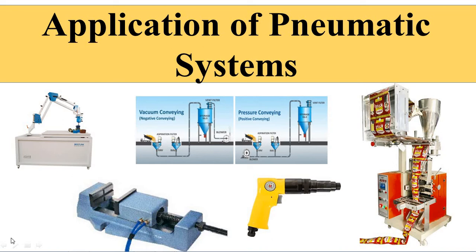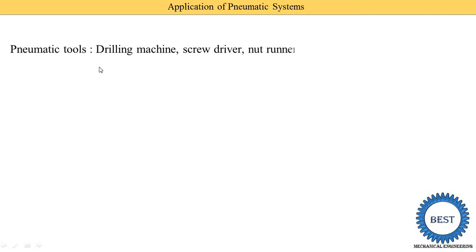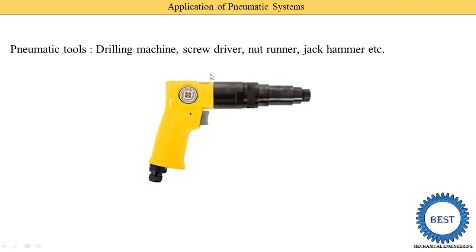In this video I discuss the applications of the pneumatic system. The first application is various pneumatic tools like drilling machines, screwdrivers, nut runners, and jackhammers. Here you see this image of the screwdriver — it is generally used to open or tighten loose bolts, and it runs by using compressed air, which is why it is called a pneumatic tool.